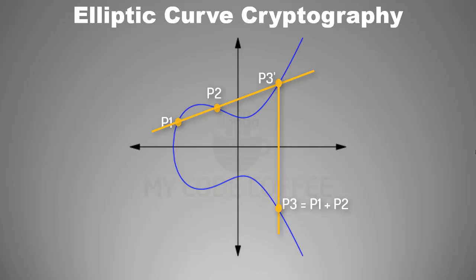To summarize: if you want to add two points on an elliptical, draw a line joining these two points, get the third point where your line intersects the curve, then get the reflection of this point. This reflection is the sum of the two initial points.